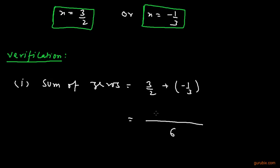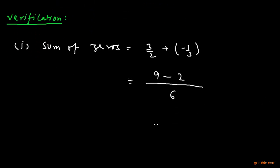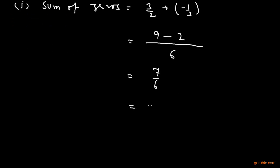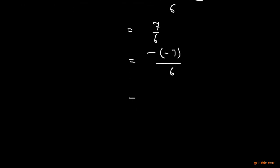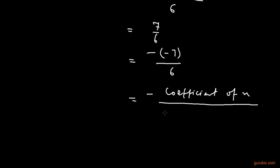Computing the sum: we get 9 over 6 minus 2 over 6, which equals 7 over 6. We can write this as minus times minus 7 over 6. This ratio equals minus coefficient of x over coefficient of x squared, so this relationship is verified.